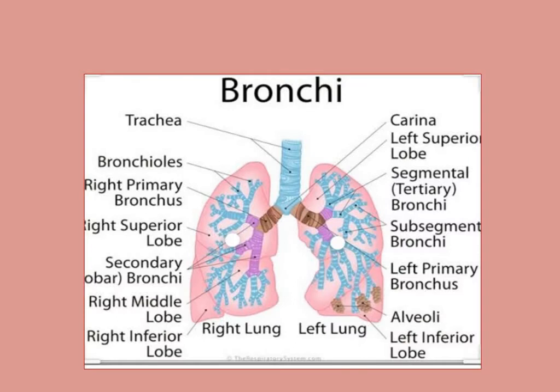Bronchi — basically, bronchi are called air passages. We can say that they are air passages which allow air to enter from the atmosphere into our lungs — that means air travels from the whole environment to our lungs. The trachea, which we studied last time, is a pipe-like structure.